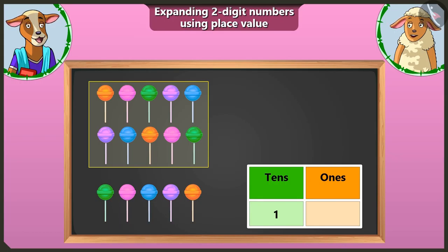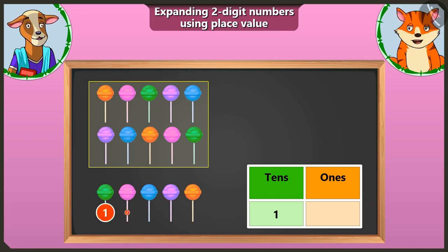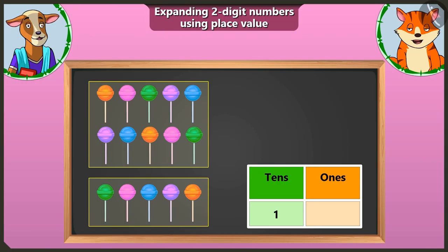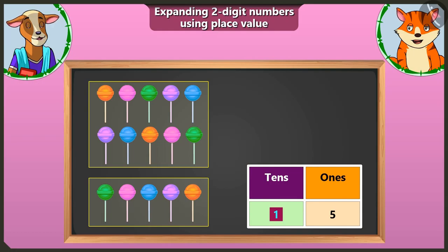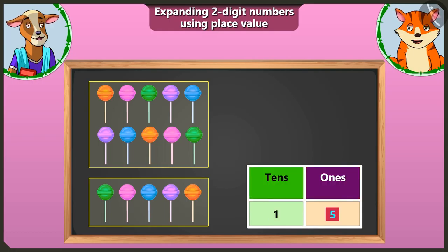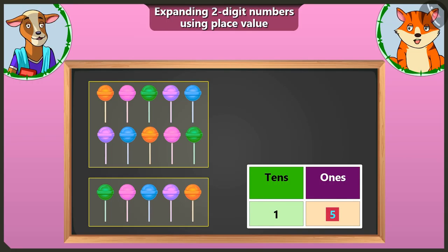Now, tell me Billy, besides the group of ten here, how many lollipops are left with which a group of ten cannot be made? There are one, two, three, four and five lollipops left with which a group of ten cannot be made. We will write the remaining five lollipops in the box of ones. One ten and five ones — what is the number that we have? One ten and five ones make the number fifteen. Well done, Billy.